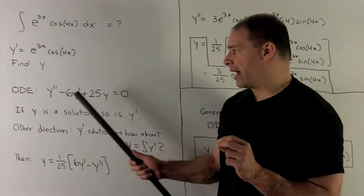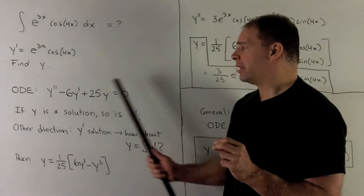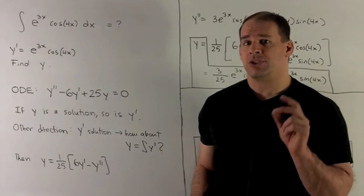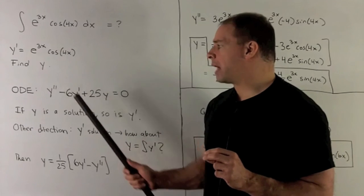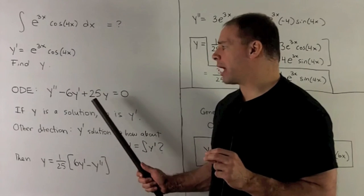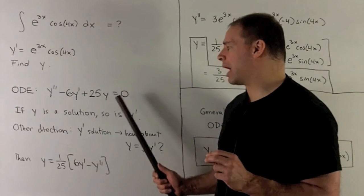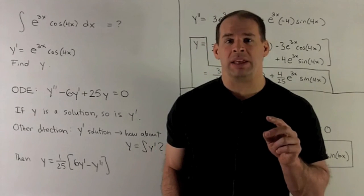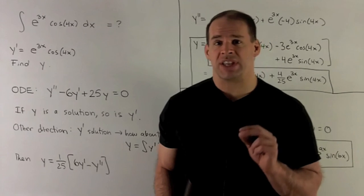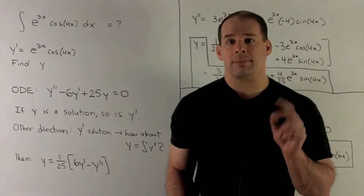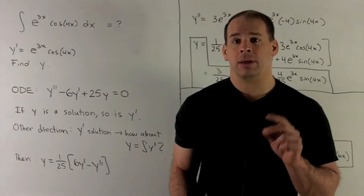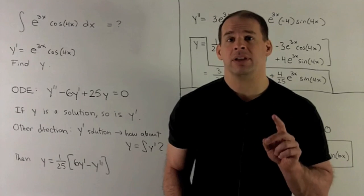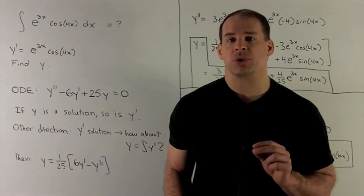So if I have two things that are equal, if I take their derivatives, what comes out will stay equal. So that'll say y triple prime minus 6y double prime plus 25y prime equals 0. And then, if I let z be equal to y prime, this just says z double prime minus 6z prime plus 25z equals 0. So the derivative, y prime, is another solution.